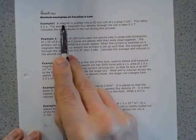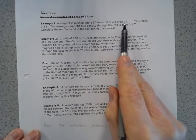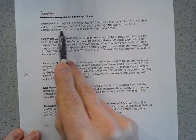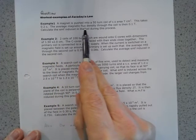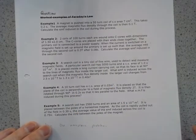A magnet is pushed into a 50 turn coil of cross-sectional area seven centimeters squared. This takes 0.2 seconds. The average magnetic flux density through the coil is then 0.1 tesla. Calculate the EMF induced in the coil during this process.